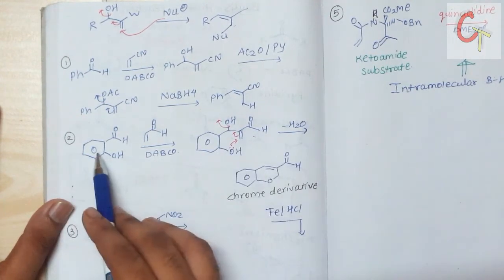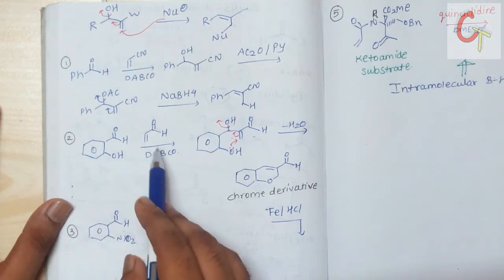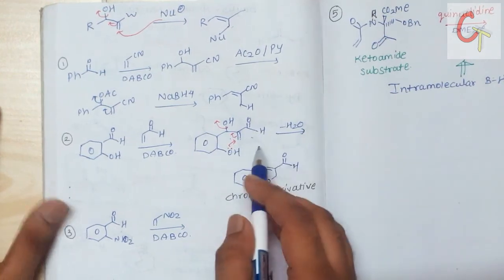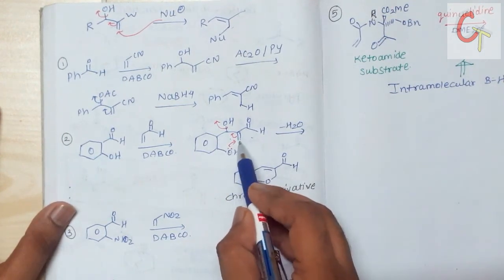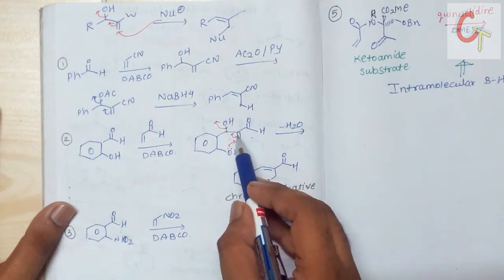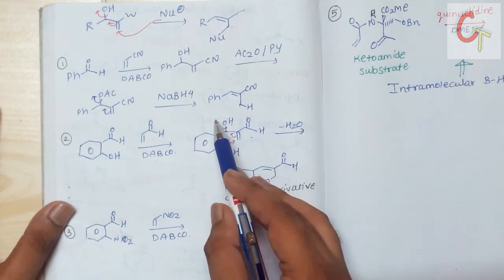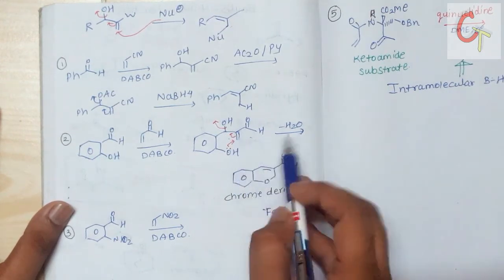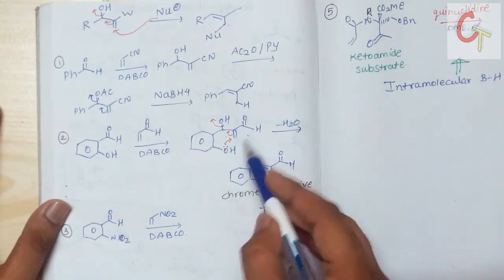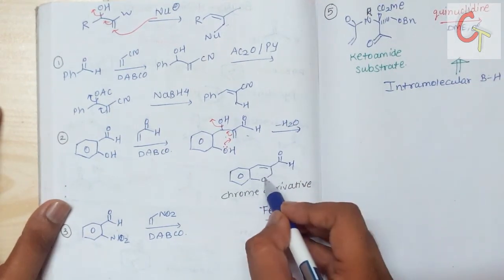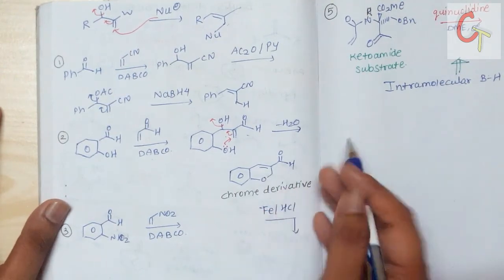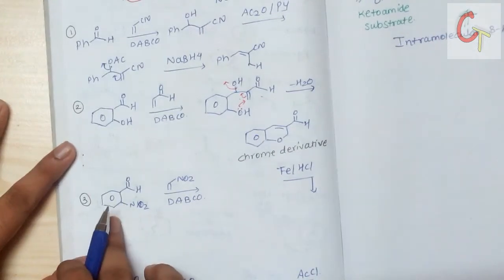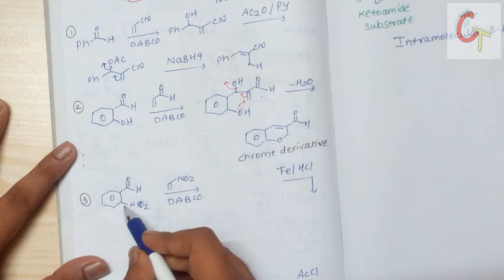Let's look at a ring formation example. After forming the Baylis-Hillman product in the first step, salicylaldehyde reacts in the presence of DABCO with this alkene to form this compound. In the next step, the lone pair on oxygen attacks this carbon, the double bond migrates, the OH abstracts the proton, and water leaves — giving a six-membered cyclic ring containing oxygen, which is a chromene derivative.